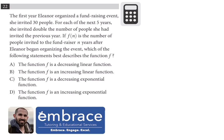Okay, let's get started. For number 22, it says the first year Eleanor organized a fundraising event she invited 30 people — that's the first year, so that gives us an initial value. For each of the next five years she invited double the number of people she had the previous year. f(n) is the number of people invited to the fundraiser n years after Eleanor began organizing the event.